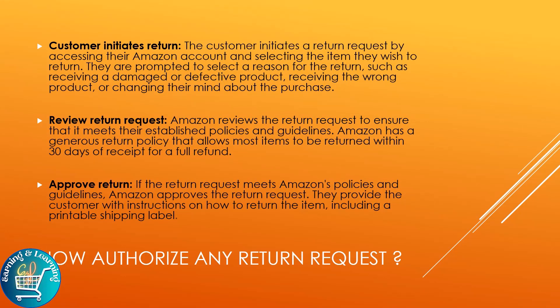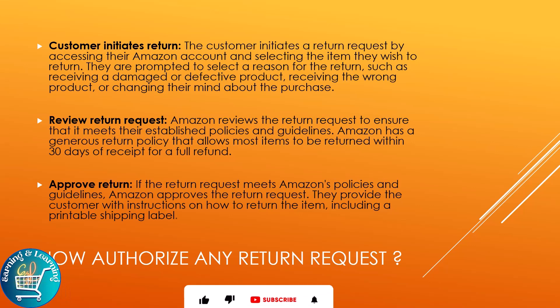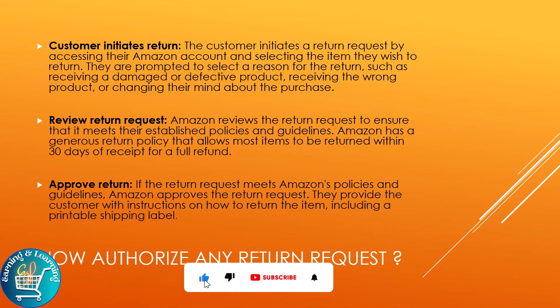How to authorize a return request — step by step. Step one: Customer initiates return. The customer initiates a return request by accessing their Amazon account and selecting the item they wish to return. They are prompted to select a reason for the return, such as receiving a damaged or defective product, receiving the wrong product, or changing their mind about the purchase.